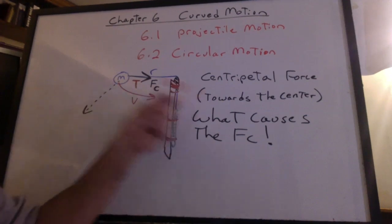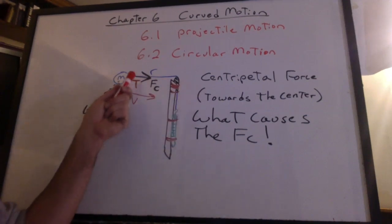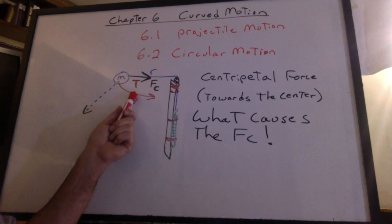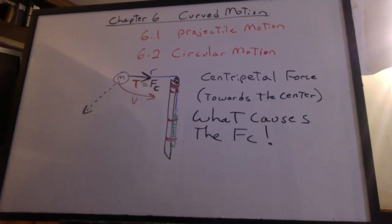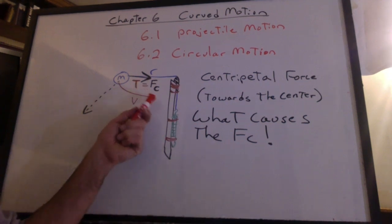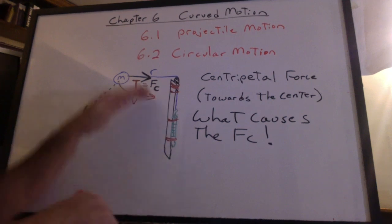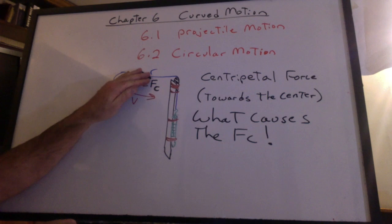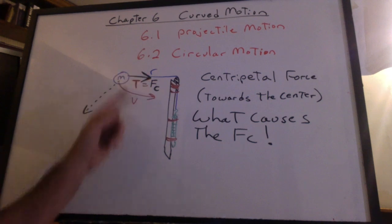We have to state what causes the FC. The force that keeps this in the circle is the tension in the rope. It's what causes the FC. So we can put an equal sign here. We can put a T there. And we can put an FC here. But you can't just put an FC. We always have to say what causes the FC.